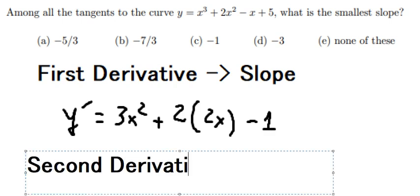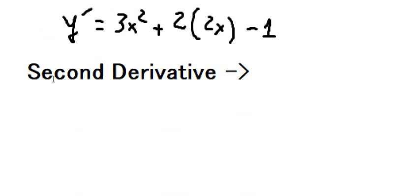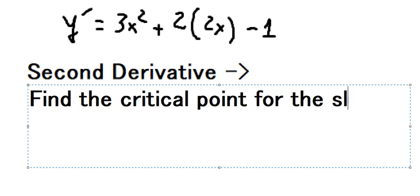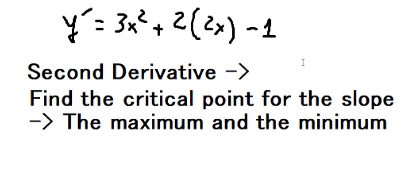Why do I need to do the second derivative? Because I want to find the critical point for the slope. This way we can find the maximum and the minimum. So now we do the second derivative of this one.